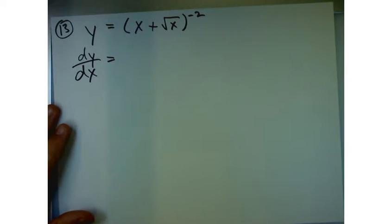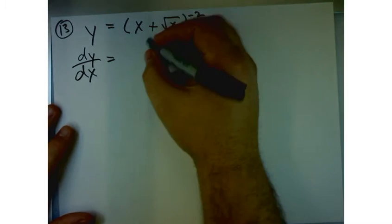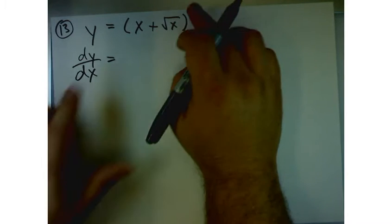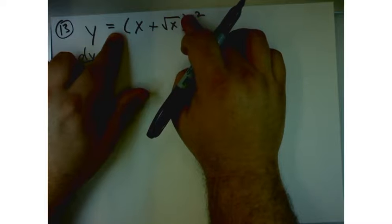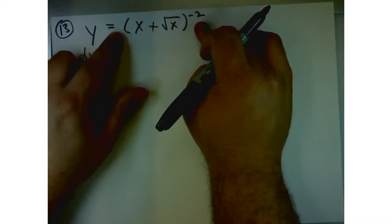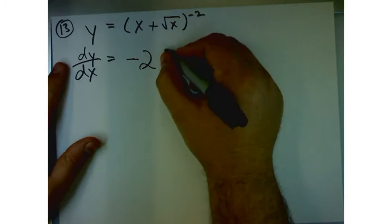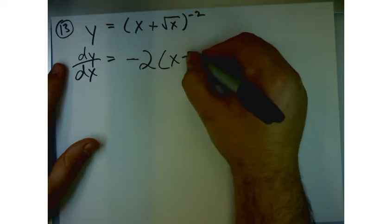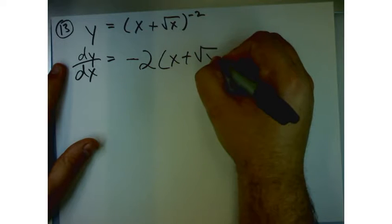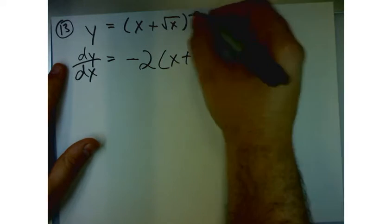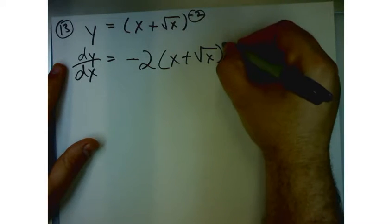Now if I do all that u, du, all that stuff, really what I'm saying is I'm going to take the derivative of this stuff on the outside first. What do I do with the negative 2? Toss it to the front. Everything on the inside remains the same, x plus the square root of x. Now this becomes what? Negative 3.